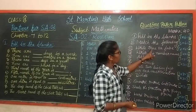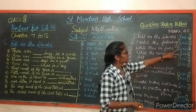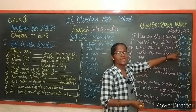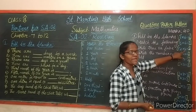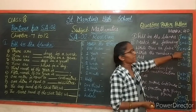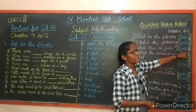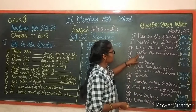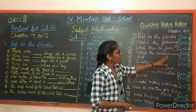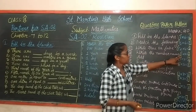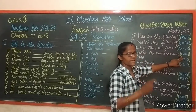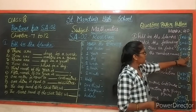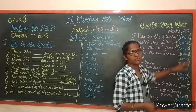Next, true or false - each carries half a mark, 4 questions totaling 2 marks. Next, write the number name - each carries 1 mark, 3 will be given, totaling 3 marks.